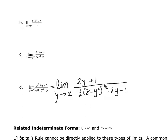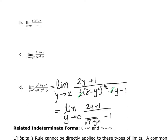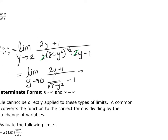Then I ask myself: can I do direct substitution without getting 0 over 0? Now I can put 2 in the numerator with no problems. Let's clean up the denominator — the limit as y approaches 2. This 2 and this 2 will cancel, and I have 2y plus 1 over 1 over the square root of 8 minus y squared minus 1.